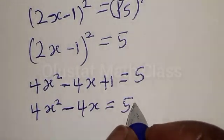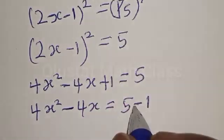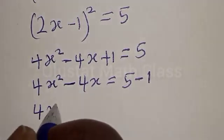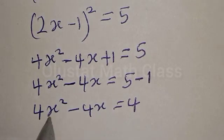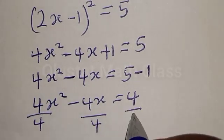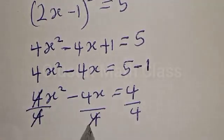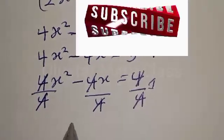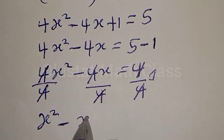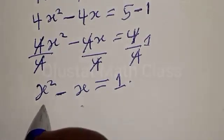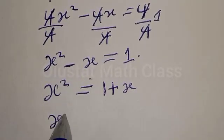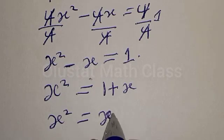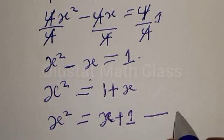Bringing 1 to the other side it becomes minus 1, so we have 4s squared minus 4s is equal to 4. Now let's divide everything by 4: this gives s squared minus s is equal to 1. Making s squared the subject of the formula, we have s squared is equal to 1 plus s, which can be written as s squared equals s plus 1. Let's call this equation star.